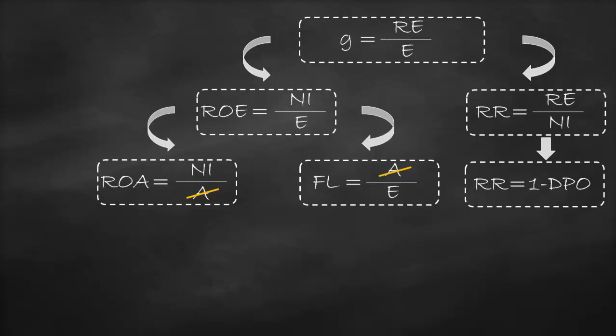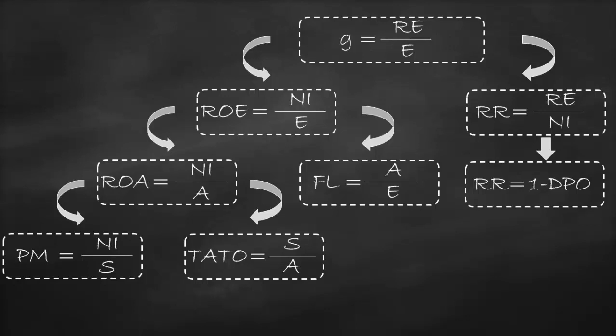This allows us to expand the return on assets formula as profit margin multiplied by the total asset turnover. The profit margin is the same as the return on sales; the profit margin formula is net income divided by sales, and the total asset turnover ratio is sales divided by assets. Sales will offset sales, so we will end up with the original formula of return on assets of net income divided by assets.